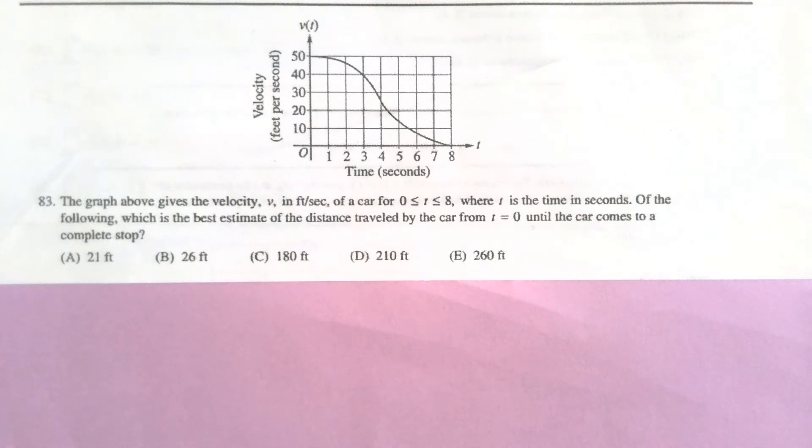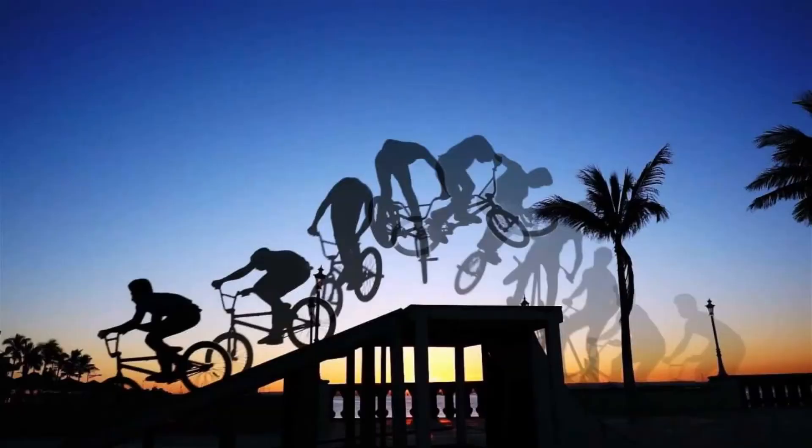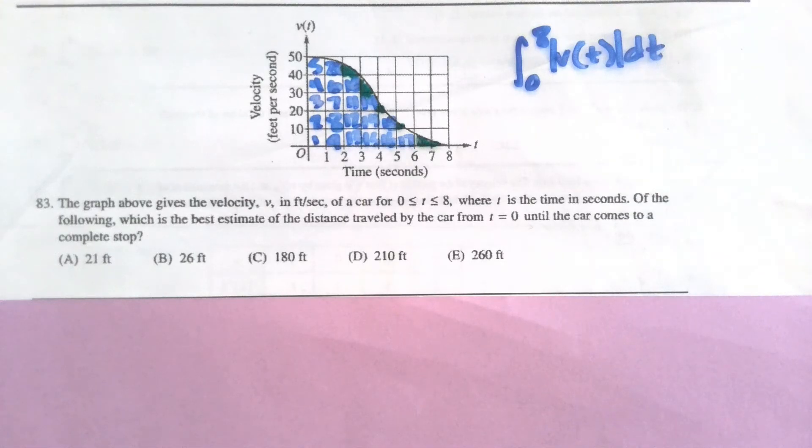Let's try a few on your own here. This first one gives a graph of a car's velocity, and then wants to know the distance traveled by the car from 0 to when it comes to a complete stop. So it looks like 0 to 8 seconds. So recall that to find the total distance that something has traveled, we're taking the integral over that interval of the absolute value of velocity. And for this particular problem, we really don't have to worry about the absolute value part because all of these velocities are positive. So if I'm taking the integral over this interval, I'm really just finding the area.